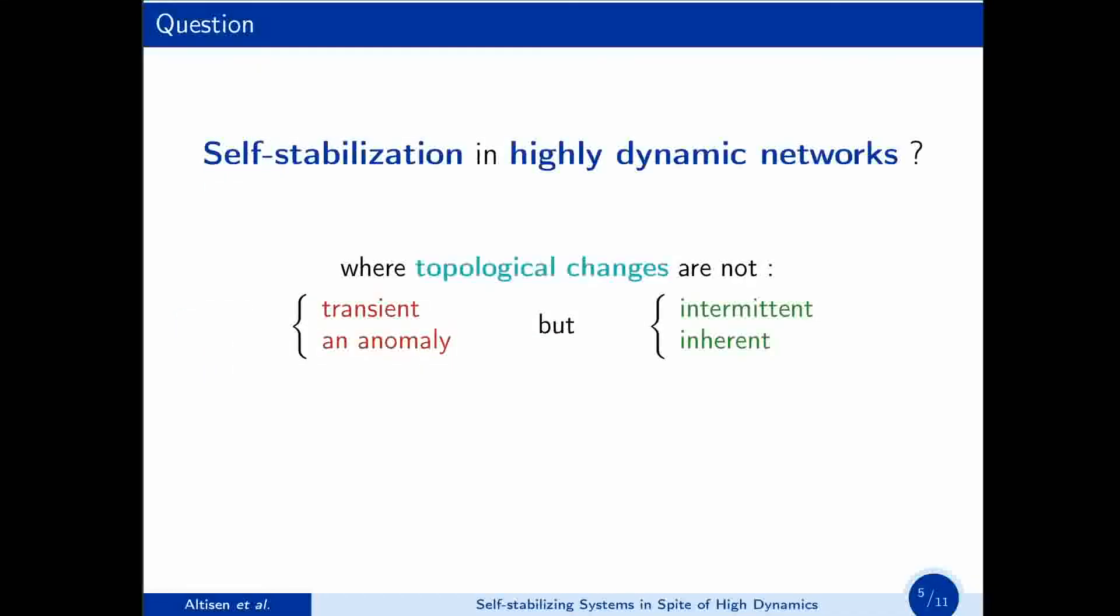So, can we do self-stabilization in highly dynamic networks, where topological changes are not transient, but are intermittent? Where topological changes are not an anomaly, but are completely inherent to the system? With that question in mind, our first contribution is the definition of self-stabilization in the context of highly dynamic networks.